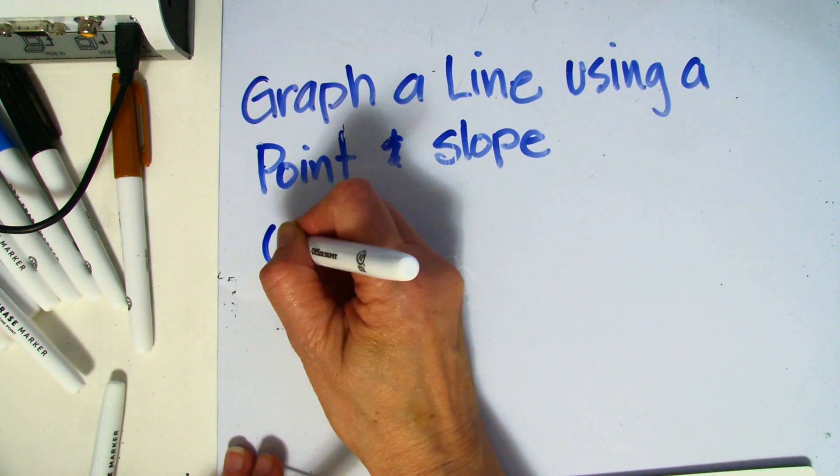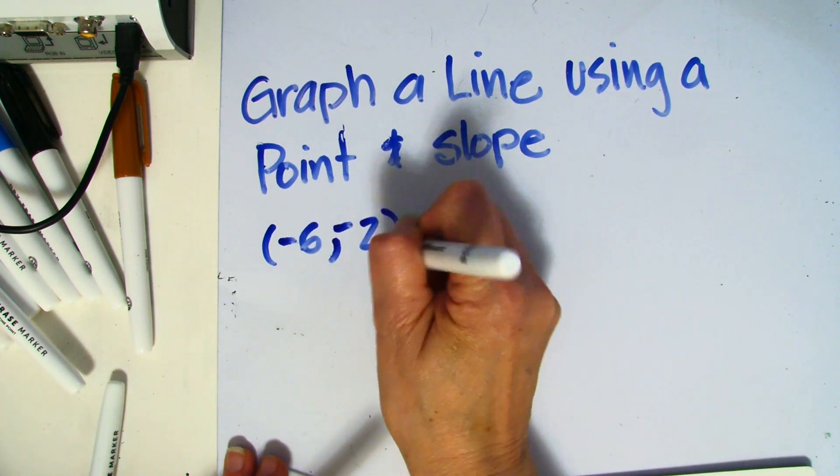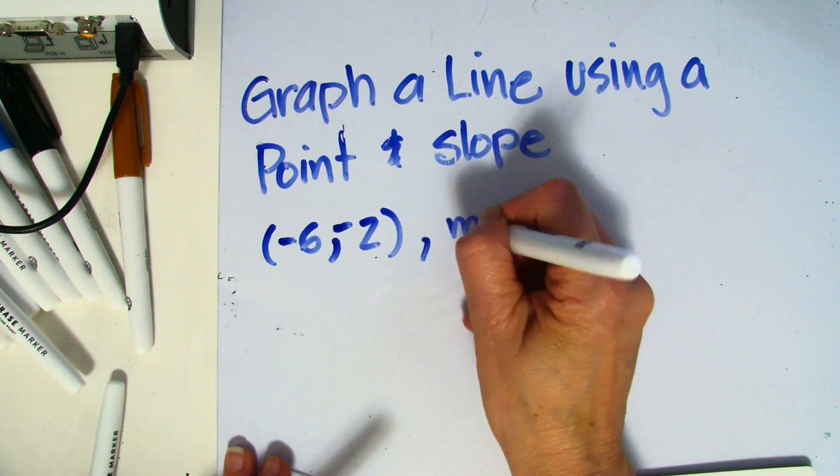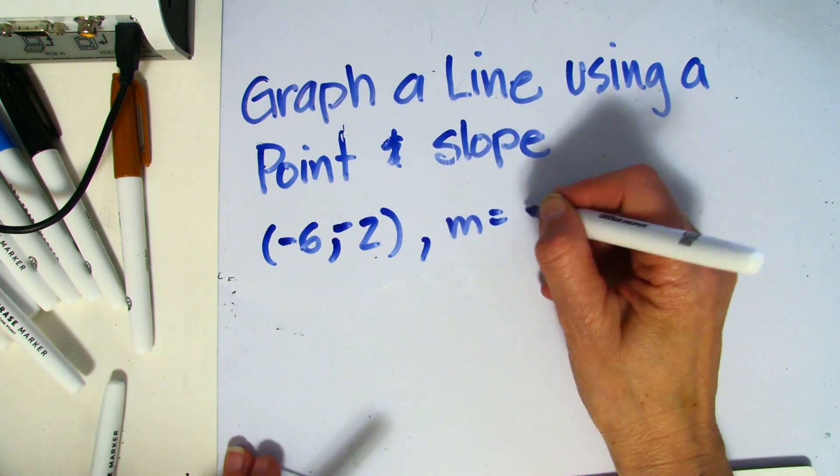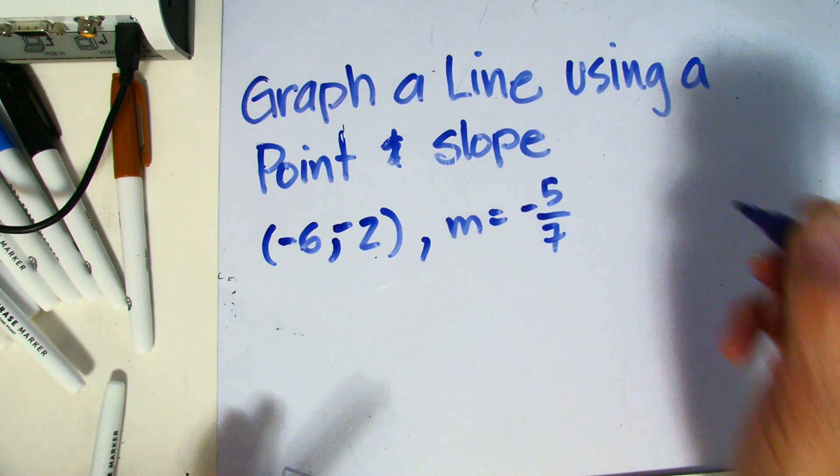Let's say we have the point (-6, -2). And our slope is negative 5/7.